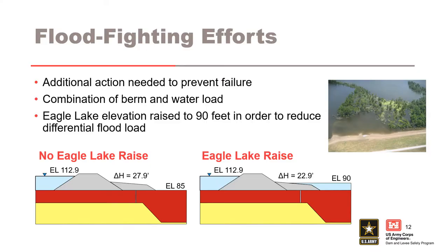With the Mississippi River elevation continuing to rise and the untested emergency berm being subjected to record flood loading, engineers with the Vicksburg District did not feel confident that the emergency berm alone would be sufficient to address the developing seepage and boil issues. Geotechnical engineers advised that a combination of berm and land side water load would be necessary to adequately fight the under-seepage forces. After serious consideration of the pros and cons, the decision was made to deviate from the water control plan for the muddy bayou control structure and raise the elevation of Eagle Lake to 90 feet, 12 feet higher than normal.